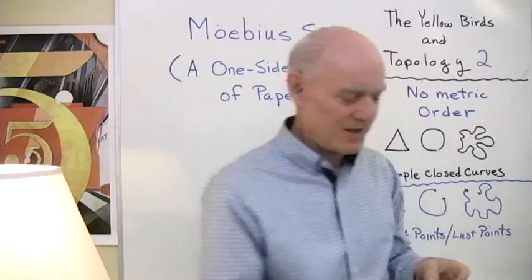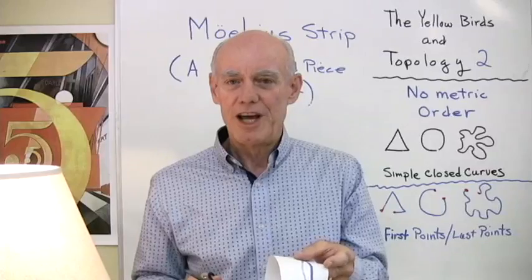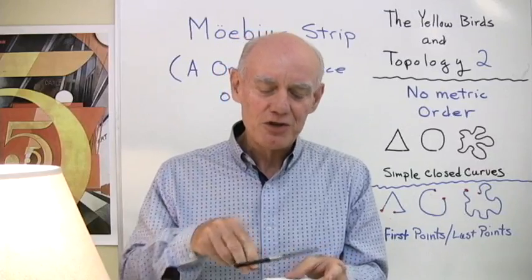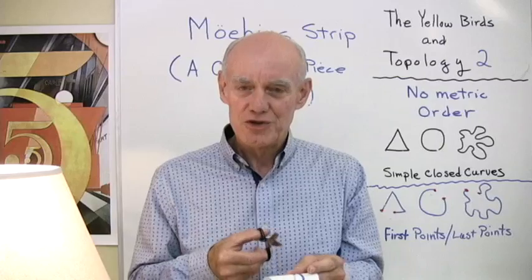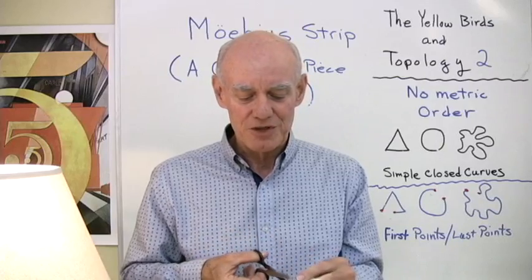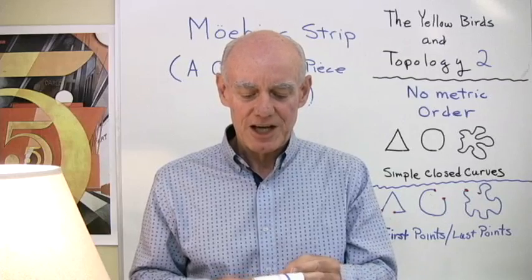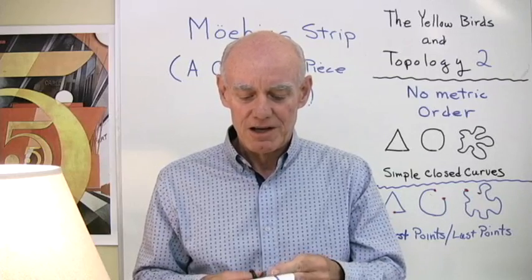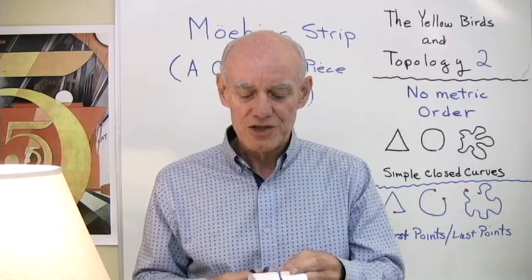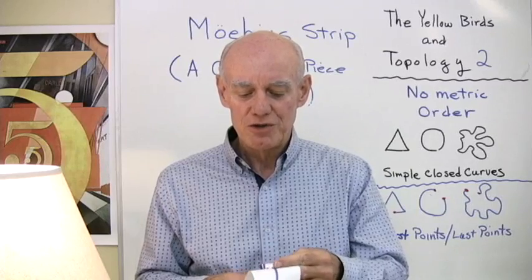Now the second thing is that this has only one edge. So if I think it has two edges, if I cut between those two edges, I'll end up with two pieces of paper. So let's do that. So I'll make that cut and I'll just start cutting. If you think it has two edges, then you think I'm cutting between the two edges.